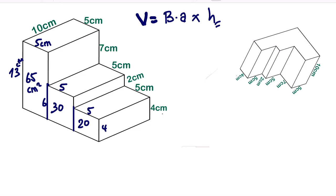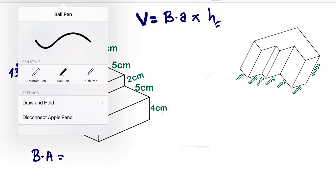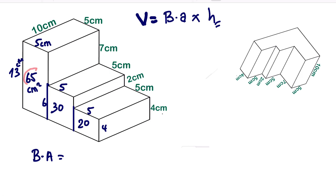So this implies our base area will be equal to, we need to add all the various areas together. So we are going to add 65 plus 30 plus 20. So our base area will give us 115 centimeters squared.